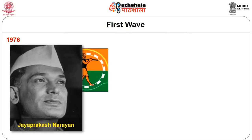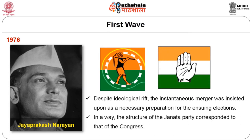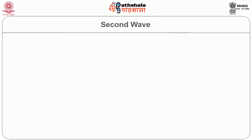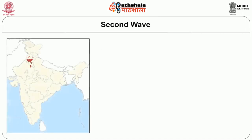Under the leadership of Jayaprakash Narayan, an opposition movement gathered momentum. Congressmen who insisted on dialogue with JP were expelled from Congress, and JP was instrumental in forming the Janata Party — a coalitional party comprising many parties that came together to challenge Congress dominance and also in opposition to the imposition of Emergency in India.